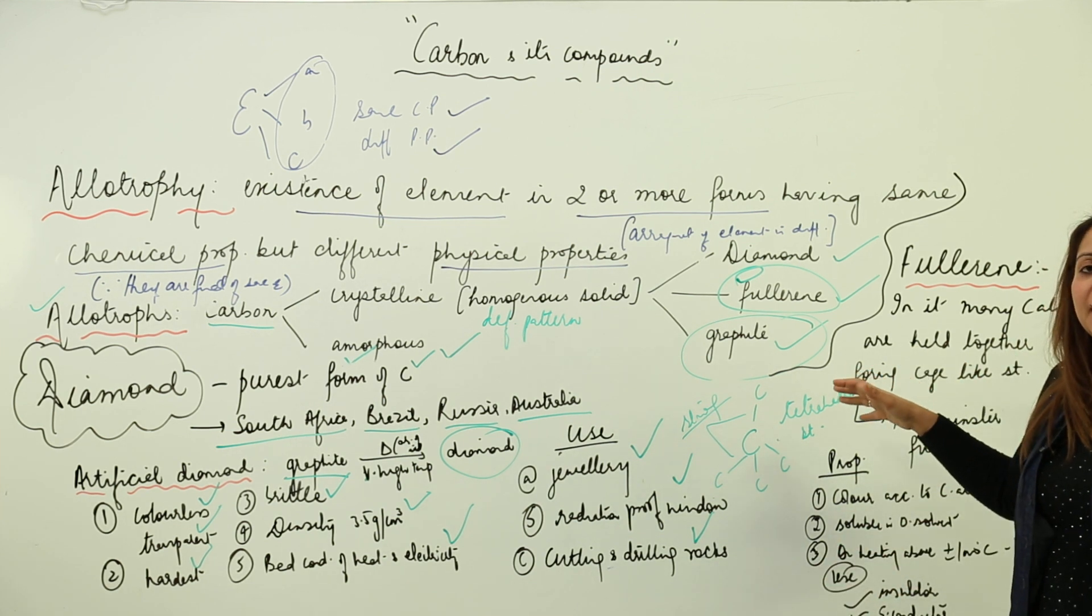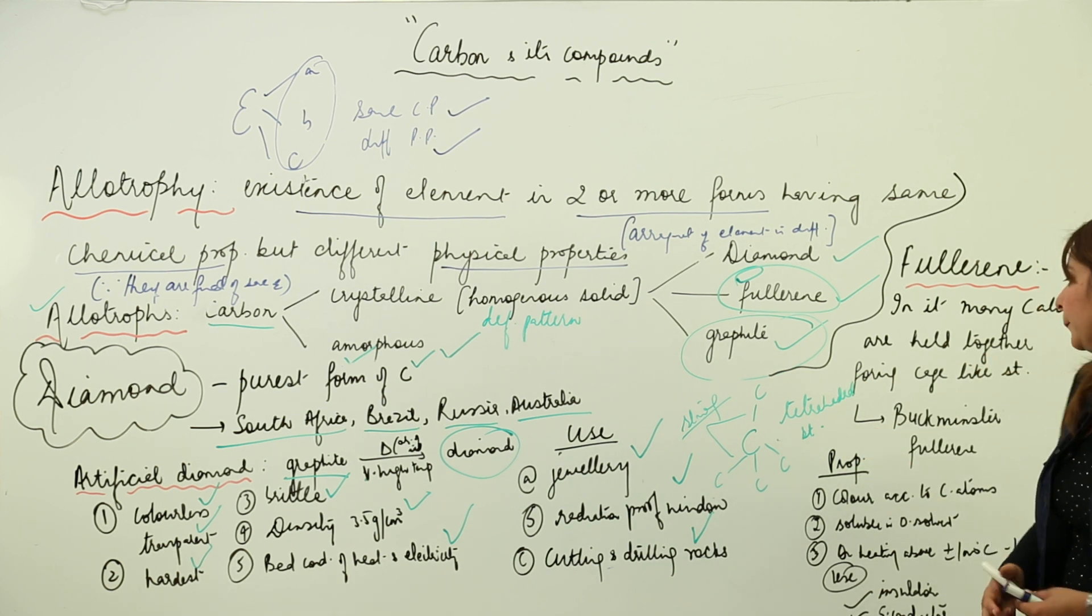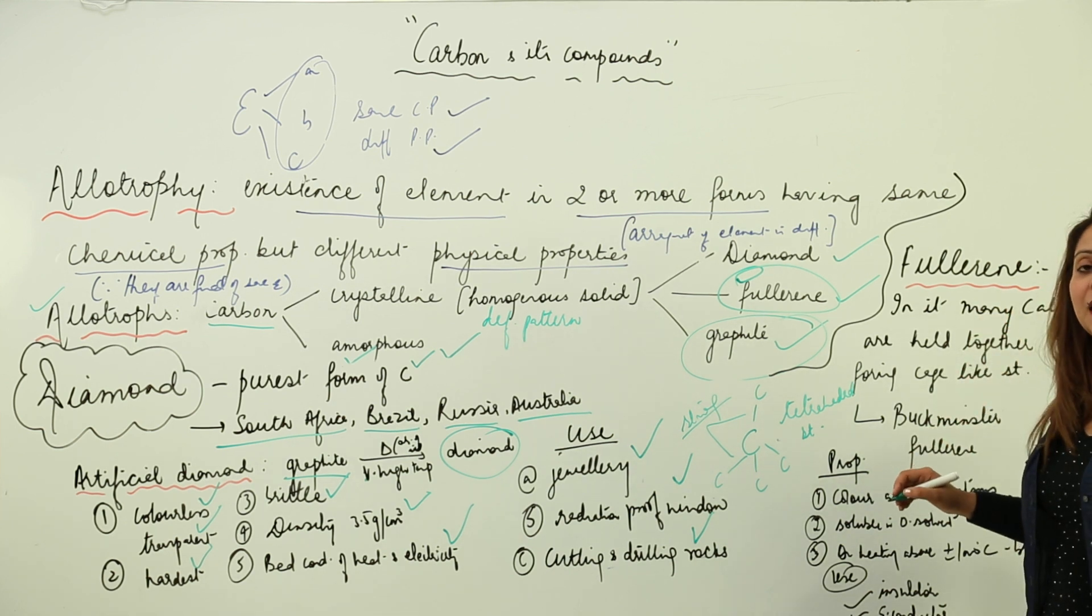It was first studied by Buckminster Fuller, therefore it is named fullerene. If you look for the properties, we see that fullerene is colored, but the color of fullerene allotrope actually depends upon the number of carbon atoms it contains.